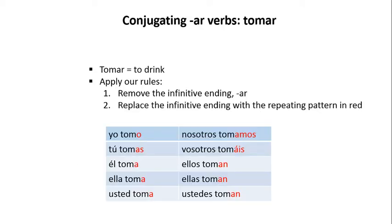Let's go through an example using the AR verb tomar. Tomar means to drink. Let's apply the rules. First, we remove the infinitive ending AR, and then we replace the infinitive ending with a repeating pattern shown below in red.